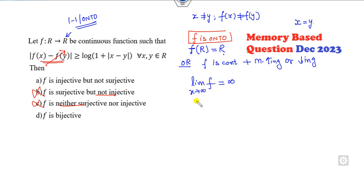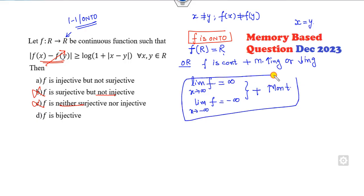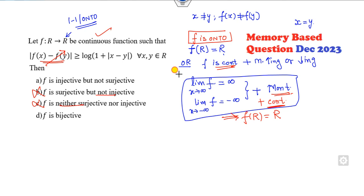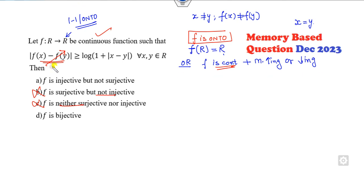You can also check: if the limit of F(X) as X approaches infinity is infinity, and the limit as X approaches minus infinity is minus infinity, and F is monotonically increasing or decreasing, then F(R) equals R. Since continuity is already given, your target is to prove F is monotonic and verify these limits.